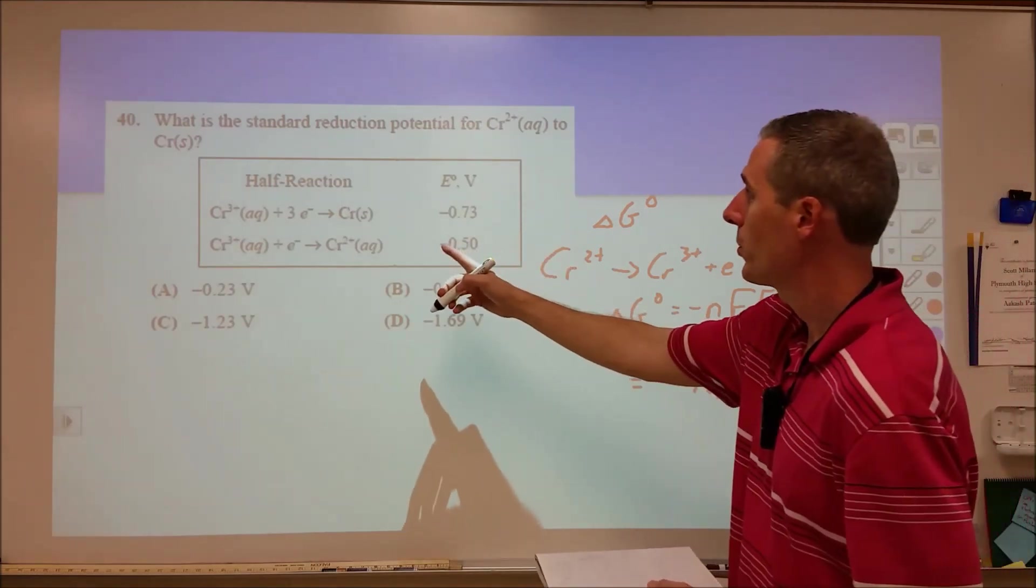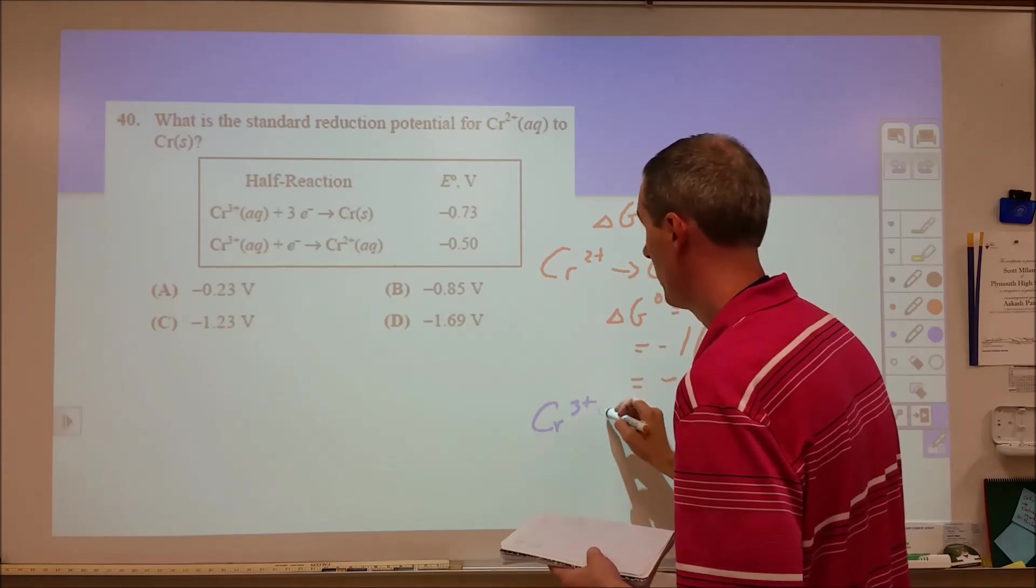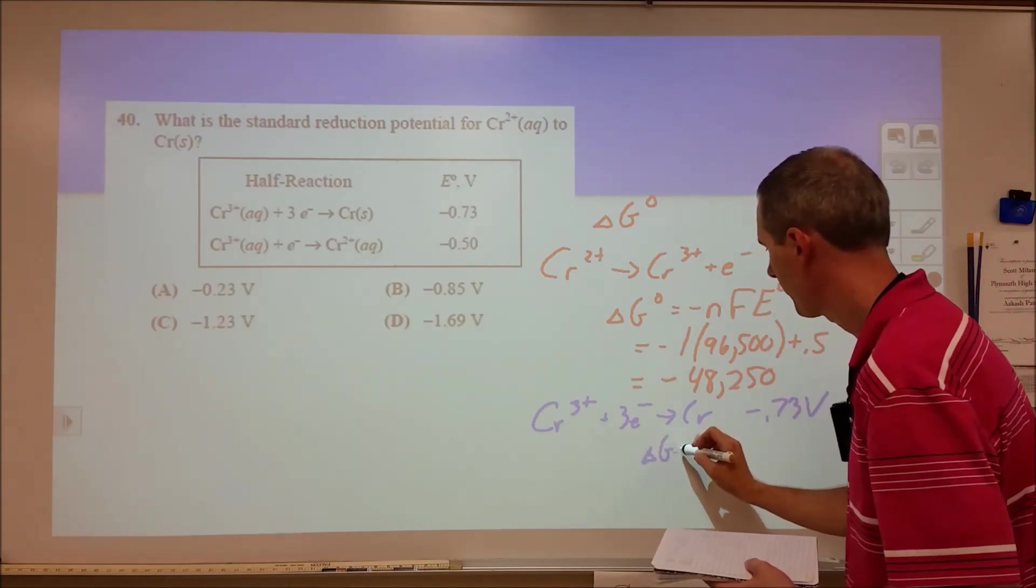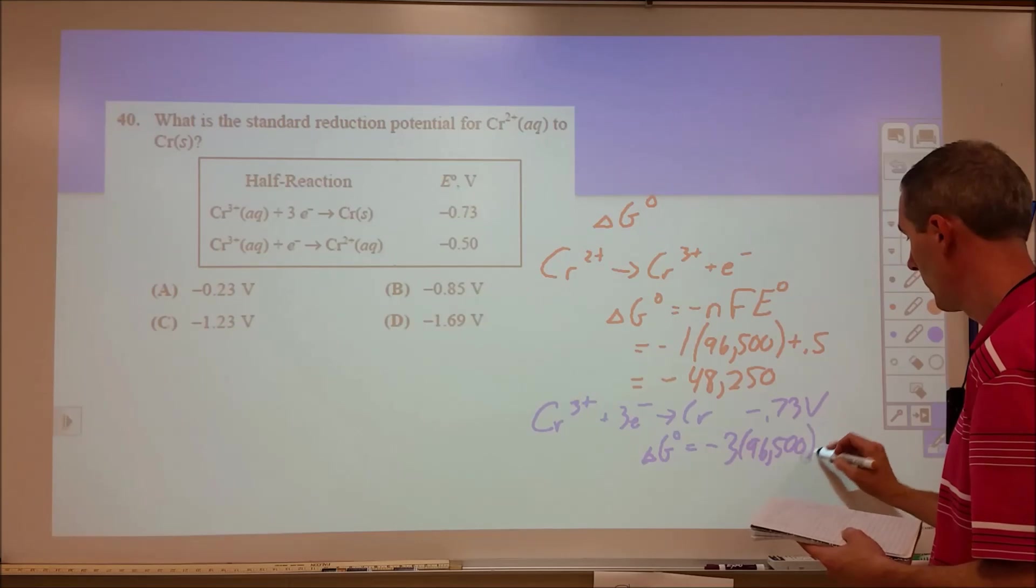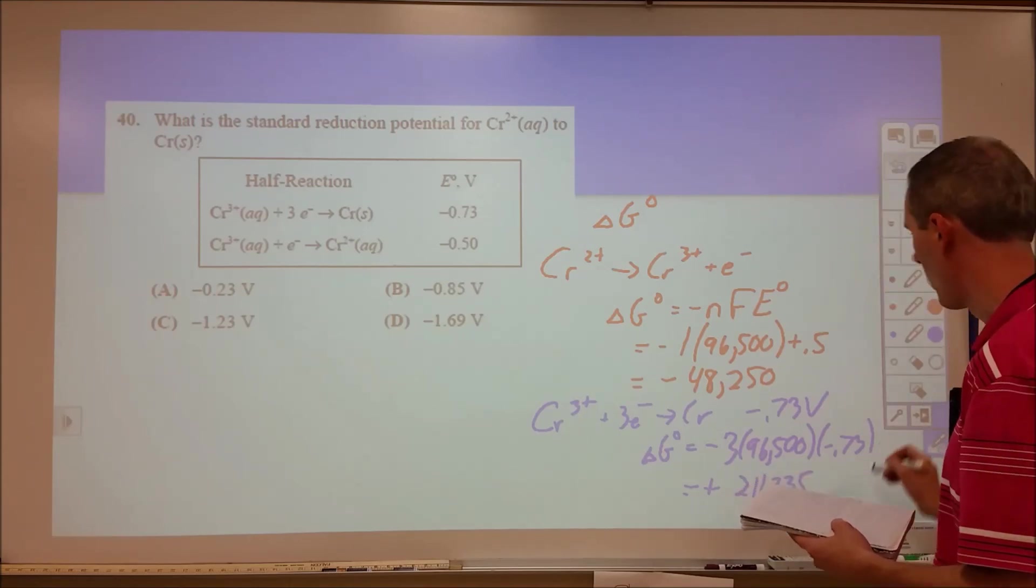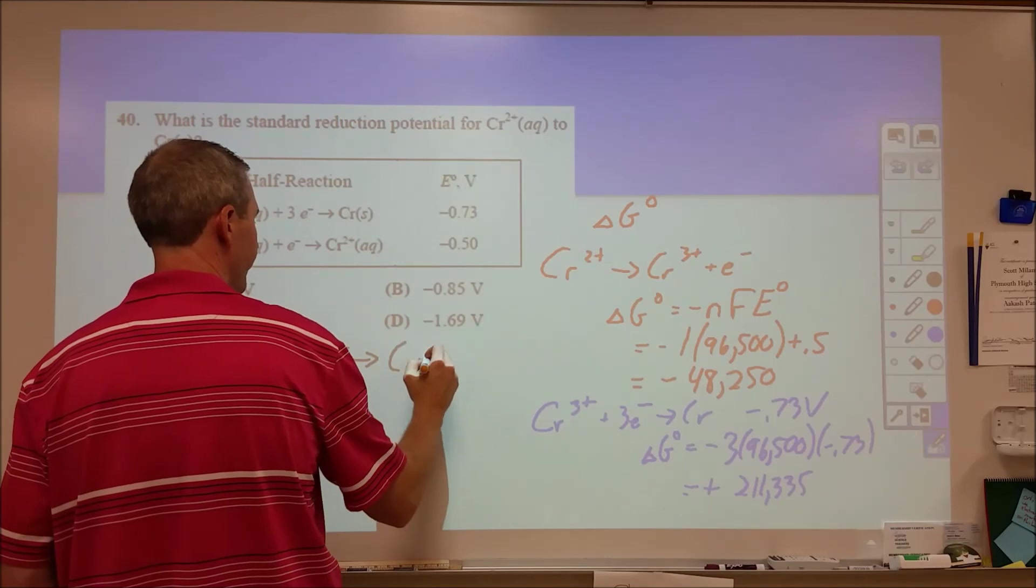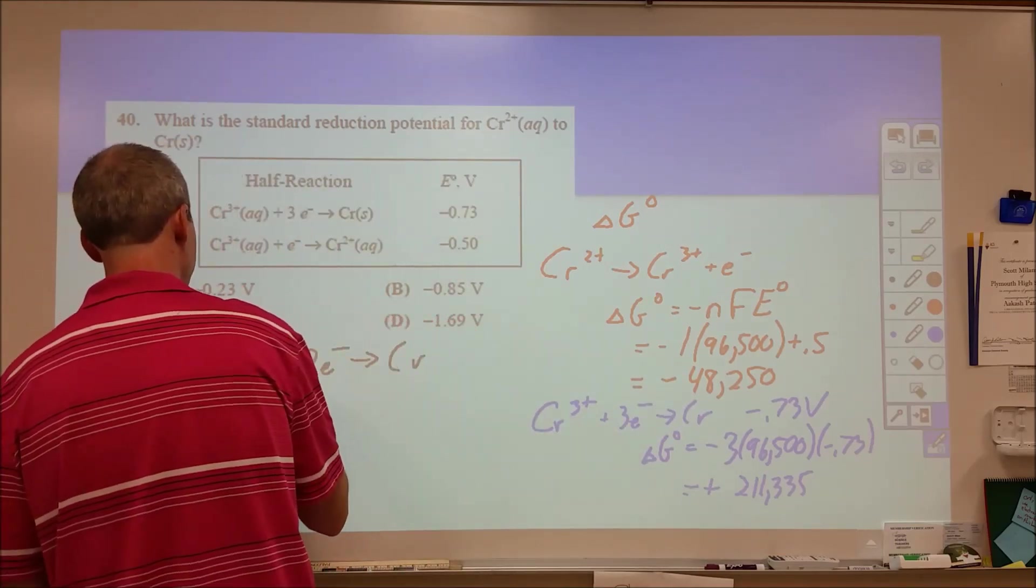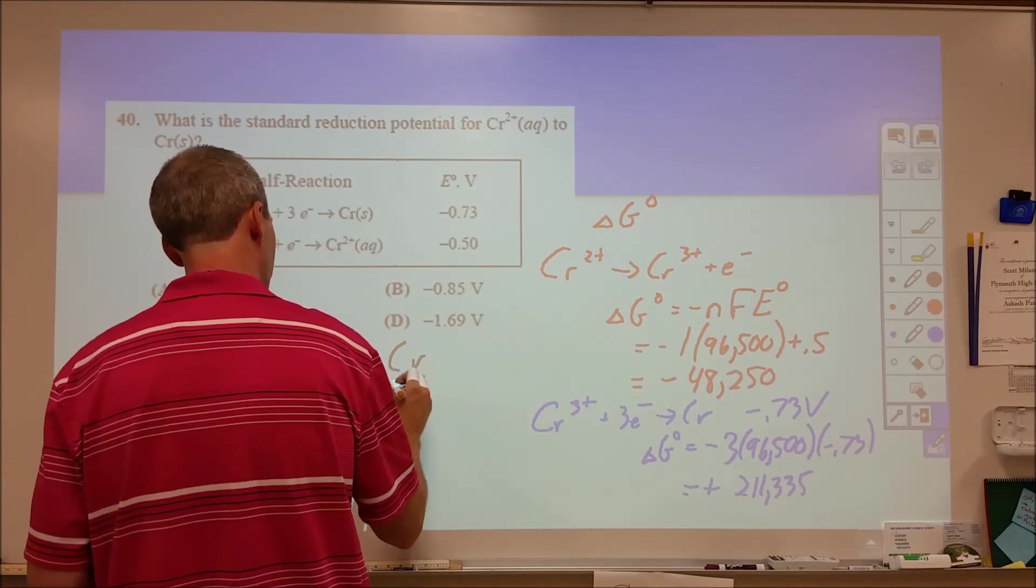Then we're going to do the same thing for the first reaction as is, because this backwards plus this adds up to this reaction. So we have Cr3+ plus three electrons yields Cr, the voltage of -0.73 volts. So our Gibbs free energy for that is equal to negative 3 times Faraday times the -0.73 volts, and that comes out to be the positive 211,335 joules per mole. Now we're going to combine these two reactions into chromium plus two electrons equals chromium. And we know that this plus this yields this. So therefore, this plus this gives us our delta G° for this, and that comes out to be plus 163,085.